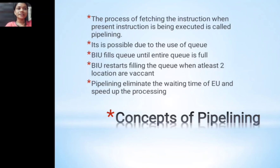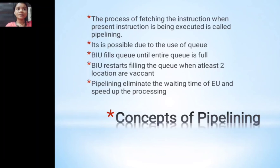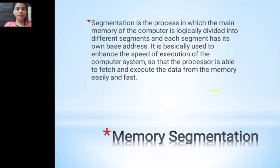The BIU restarts filling the queue when at least two locations are vacant. Pipelining eliminates the waiting time for the execution unit and speeds up processing. The advantage of pipelining is that when one instruction is being executed, the waiting time for the next is reduced, and processing speed is increased.